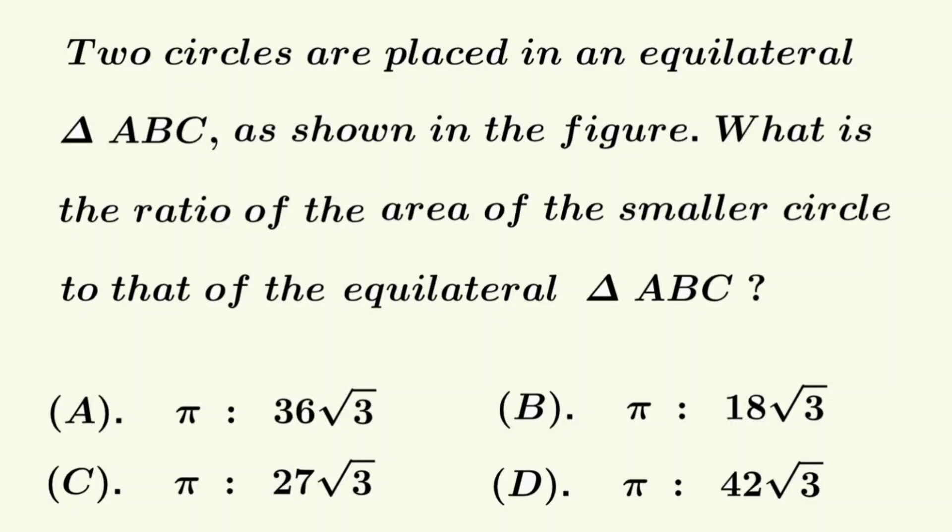Hello everyone and welcome once again. Today's problem which we are going to discuss is that two circles are placed in an equilateral triangle ABC as shown in the figure. What is the ratio of the area of the smaller circle to that of the equilateral triangle ABC? Four options are given and we have to select the correct answer.